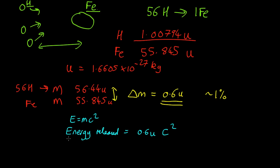So if we take 56 hydrogens to one iron, we're getting about 10 to the minus 10 joules. Energy per unit mass is 10 to the minus 10 over 10 to the minus 25 kg. So we're getting a whopping 10 to the 15 joules per kg.